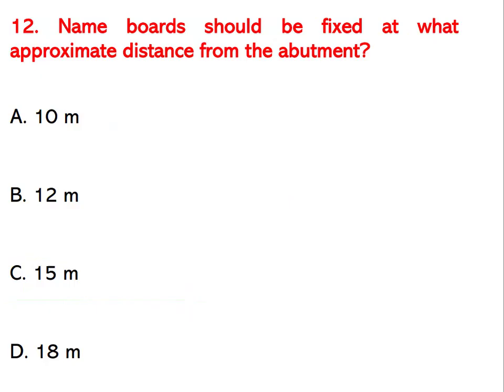Name boards should be fixed at what approximate distance from the abutment? Options are 10 meter, 12 meter, 15 meter, or 18 meter. The right answer is 15 meters.